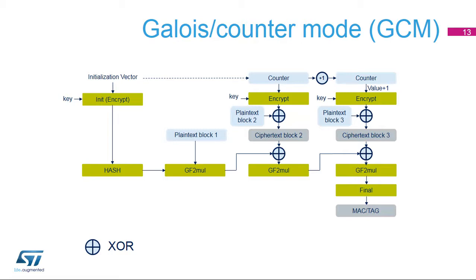In Galois counter mode, or GCM, the plaintext message is encrypted while a message authentication code is computed in parallel, thus generating the corresponding ciphertext and its MAC, also known as the authentication tag. It is based on the AES counter mode for confidentiality, and uses a multiplier over a fixed finite field for generating the tag. It requires an initialization vector at the beginning. Part of the GCM message — here block 1 — might not be encrypted; this block is called the authenticated header.